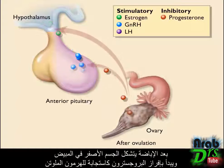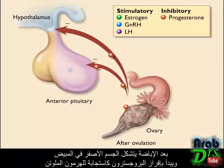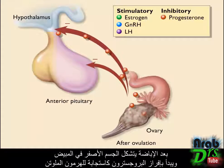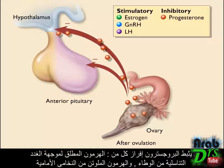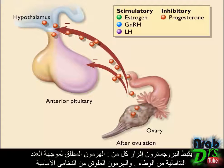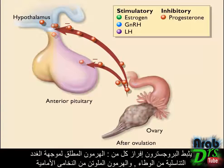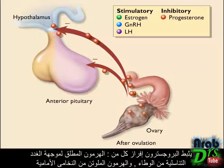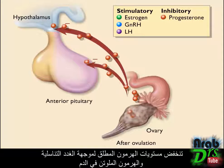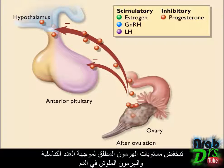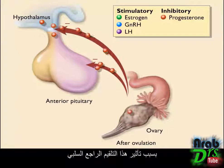After ovulation, the corpus luteum is formed in the ovary and begins to secrete progesterone in response to luteinizing hormone. Progesterone inhibits the release of gonadotropin-releasing hormone from the hypothalamus and luteinizing hormone from the anterior pituitary. Blood levels of gonadotropin-releasing hormone and luteinizing hormone decrease because of this negative feedback effect.